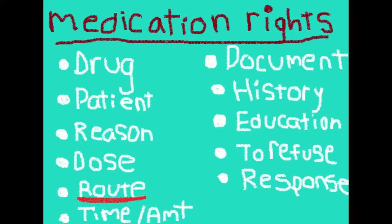The right time and amount. There are certain medications that you could give multiple doses of, but you have to allow time in between. So you would want to find out — if you're giving aspirin, for example — when they took it last, if they took it at all, because you want to make sure enough time has passed before you give the next dose.